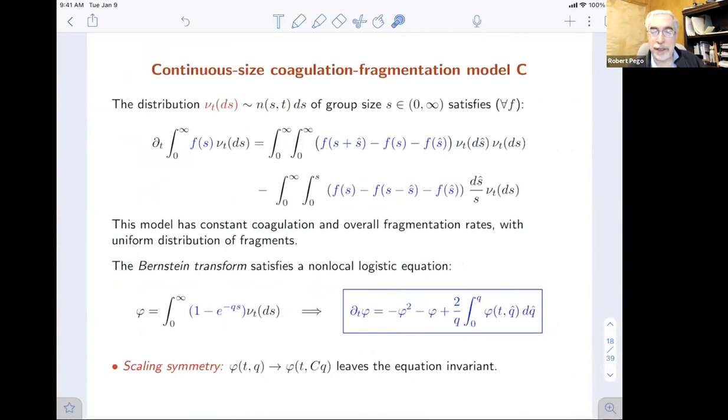Here's the continuous size model. The discrete size goes over to something which might have a density n, but in general there's a size distribution measure nu. The moment identity is a weak form of the equation, time derivative. There's a nonlinear behavior that looks kind of like a convolution. S sizes of S and S hat are destroyed and produce the size of S plus S hat. And there's a loss term, a linear loss term due to the fragmentation.